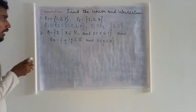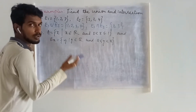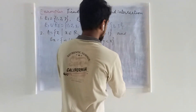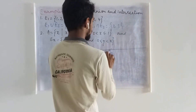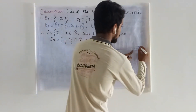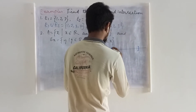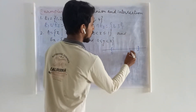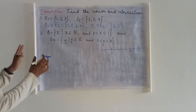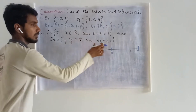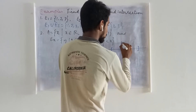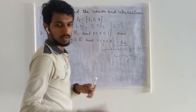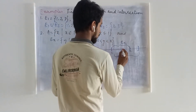Now let us come to this example, which will give you a clear idea about arbitrary union and arbitrary intersection. Set A is defined as the set of all real numbers satisfying a given condition. On the number line, mark zero and one — we are including one but excluding zero. This is our set A. For every element X in A, we define Ex to be the set of all real numbers satisfying a corresponding condition, covering from zero up to X.